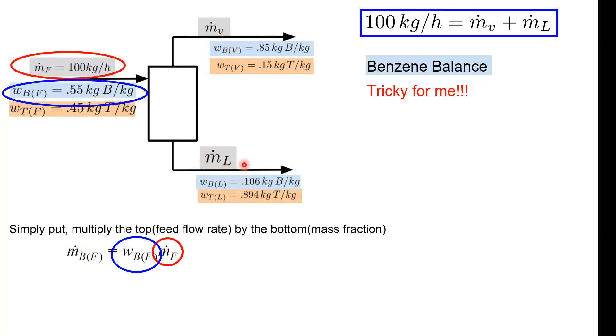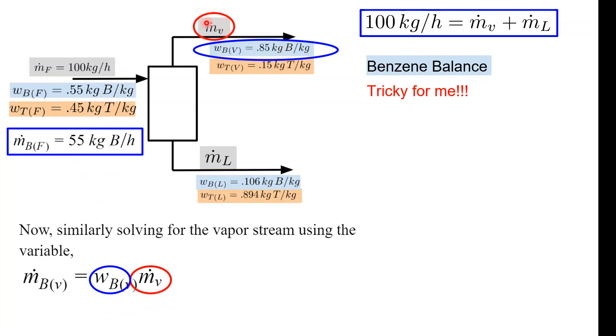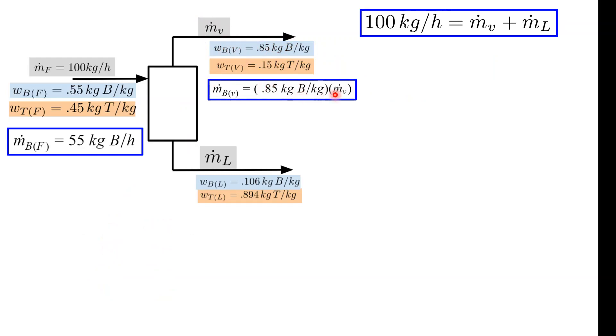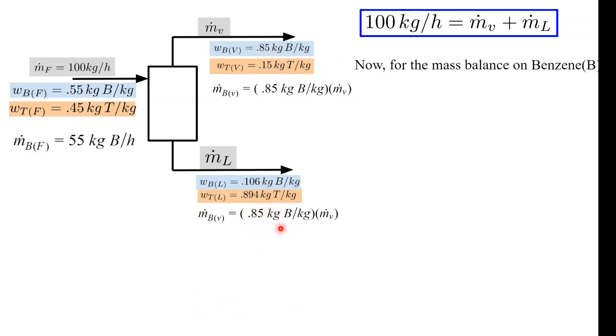Do that again for these guys and these guys. Do it in terms of the variables first, and then plug in the numbers. It's really just multiplying the top times the mass fraction. In this case, it's gonna be 0.55 times 100, and it's just gonna be 55 kilograms benzene per hour. Notice how the units change - before it was kilograms of benzene per kilogram because it's a fraction, now it's kilograms of benzene per hour. You can either box it or leave a mental note, or you can plug it in later. Again, do it right here. The cookie-cutter approach is just multiplying the top times the fraction. So it's gonna be 0.85 times the flow rate on top. And again, down here, what is it going to be? 0.106 times m.l. Oh, this is a typo - it's going to be 0.106 and then m.l.